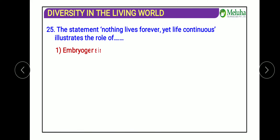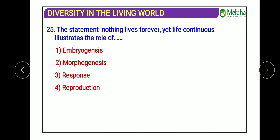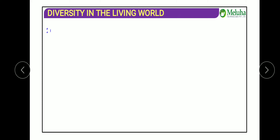The next question: the statement 'nothing lives forever yet lives continues' illustrates the role of which process? The answer is reproduction. Organisms reproduce and form young ones; the young ones develop further while the parent organism eventually dies, but life continues through offspring. Embryogenesis is development of a zygote into an embryo; morphogenesis is development of larval stage to adult; response means reacting to stimuli.